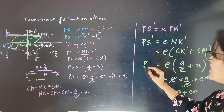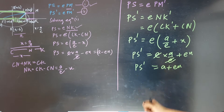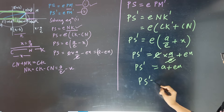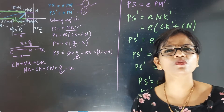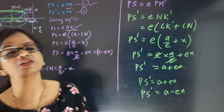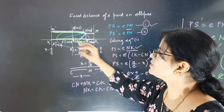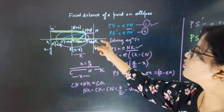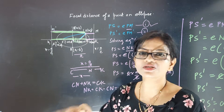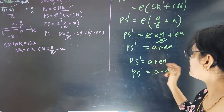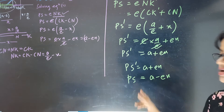So PS dash is coming as a plus ex and PS is a minus ex. The focal distance is the distance between point P and the focus. With two foci we have PS and PS dash.